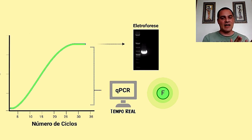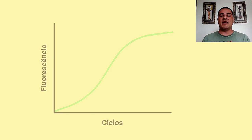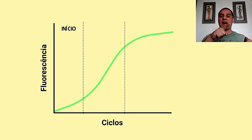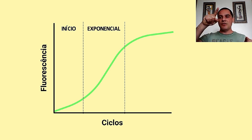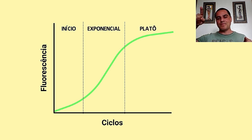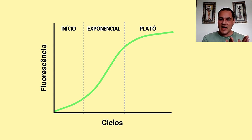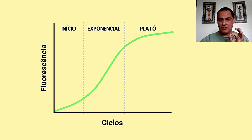As PCRs, tanto a clássica quanto a em tempo real, são divididas em três etapas: uma etapa de início com amplificação em escala linear, depois passa por uma escala log, e chega no que a gente chama de platô. A PCR em tempo real consegue ver todo esse aumento no número de cópias de maneira indireta através do monitoramento do fluoróforo que vai estar na solução.